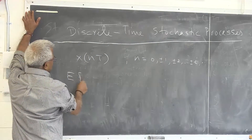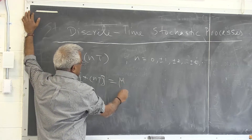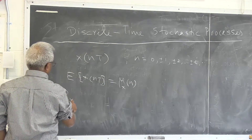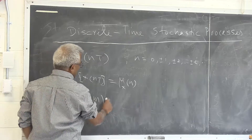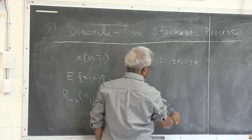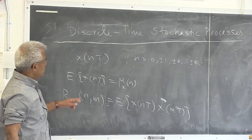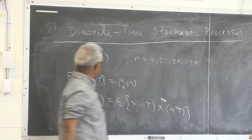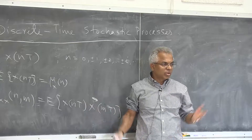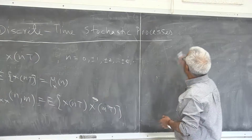The mean of the process is x of nt, and if the process is not wide-sense stationary, it will generally be a function of n. The autocorrelation function is r_xx(n, m), which is the expected value of x(nt) · x(mt). If the process is wide-sense stationary, this is a constant. For strict stationarity, any single random variable should not be a function of the time index.